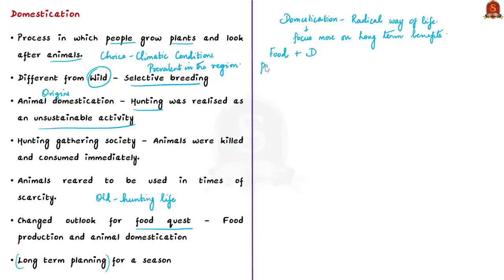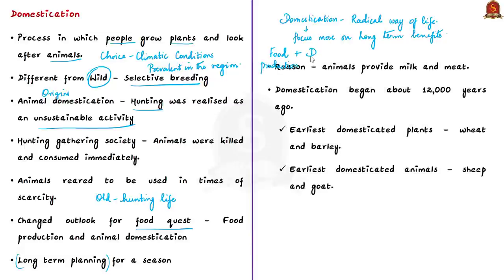You can say that food production and animal domestication represented a new and changed outlook for the food quest. With domestication, people moved from their old hunting life where they hunted and consumed the same day to a new radical life in which they planned not only for a day but for the season as a whole. The art of long-term planning also came to people with domestication.